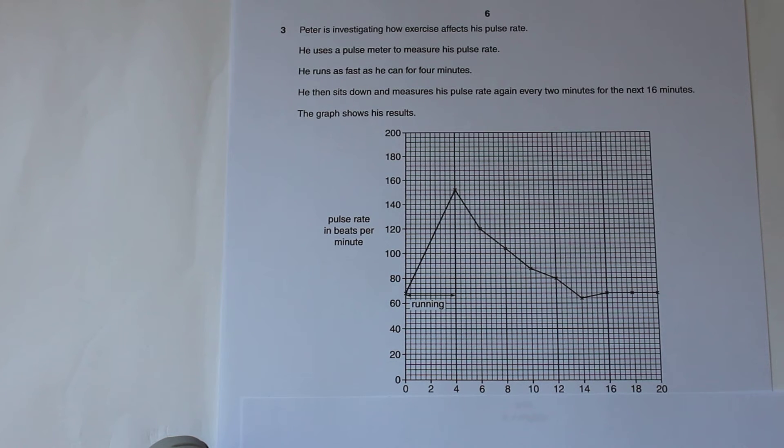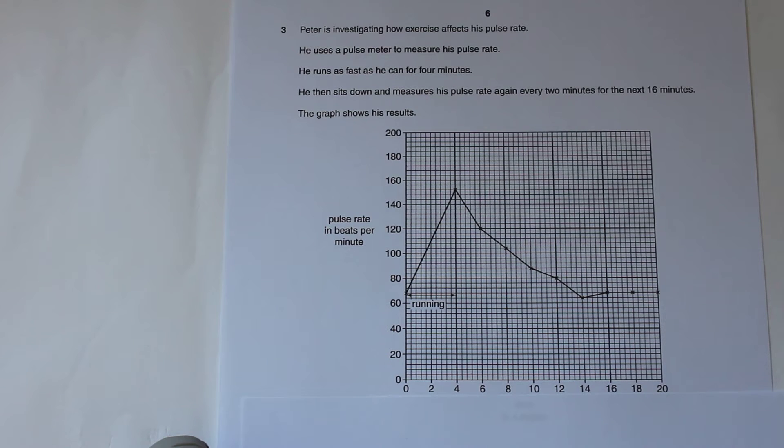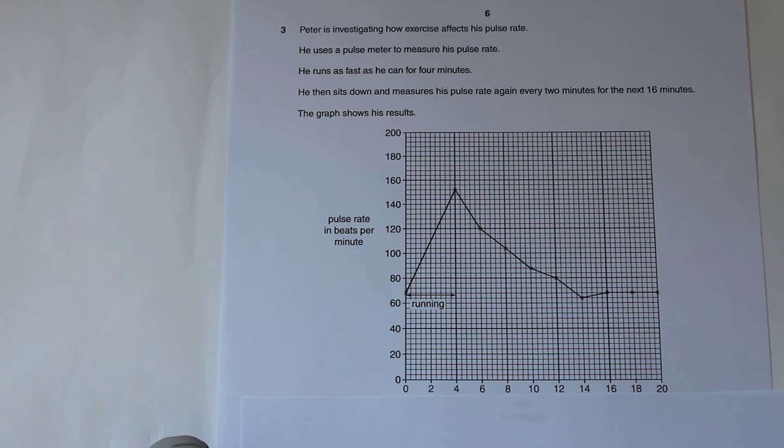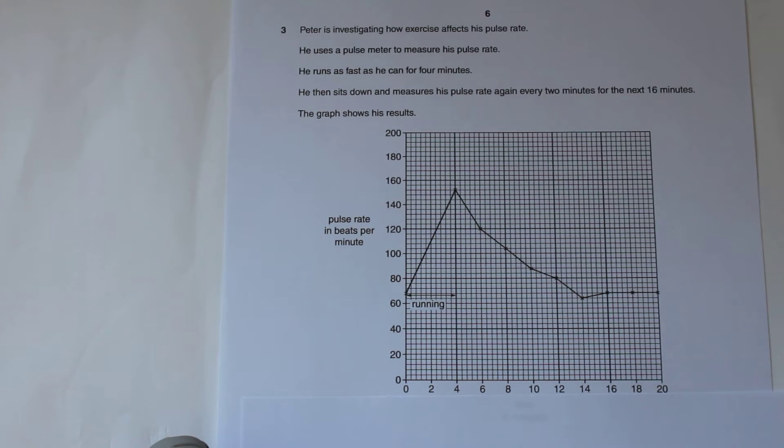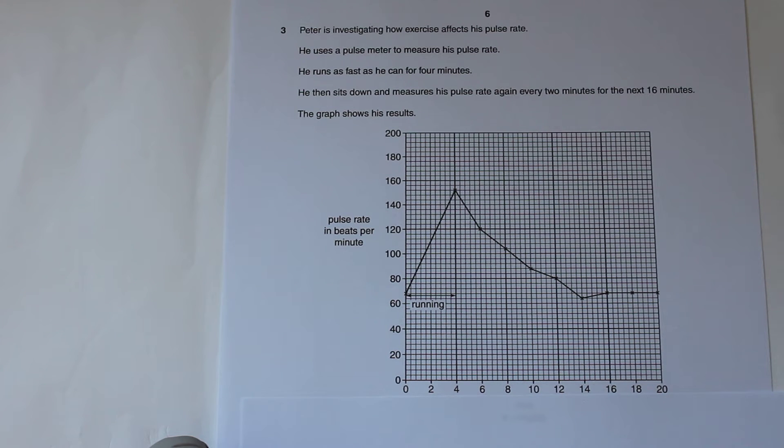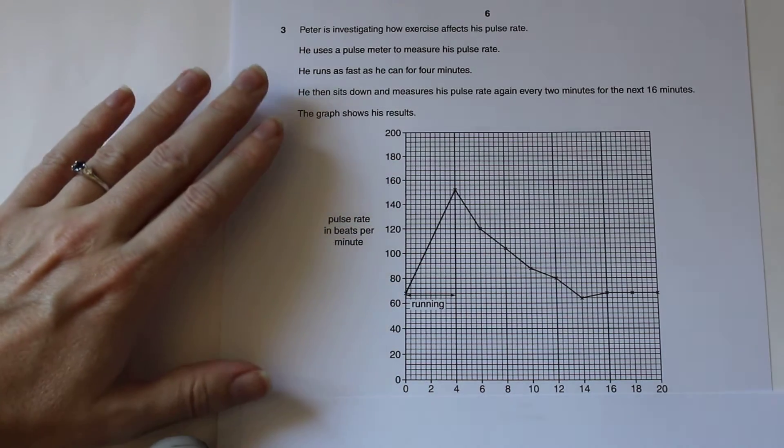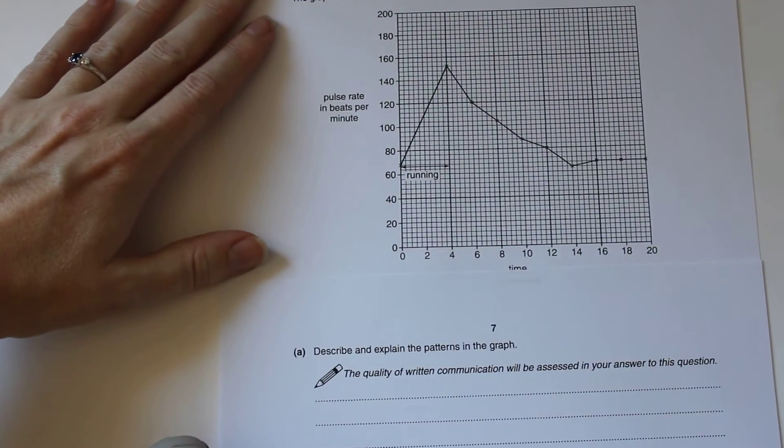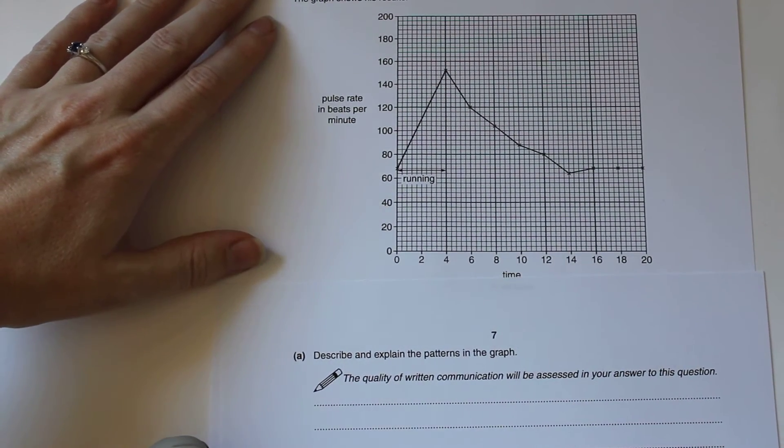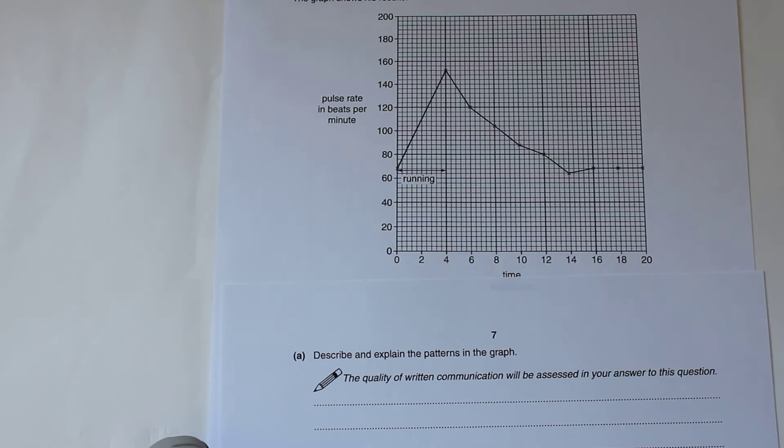Peter is investigating how exercise affects his pulse rate. He uses a pulse meter to measure his pulse rate. He runs as fast as he can for four minutes. He then sits down and measures his pulse rate again every two minutes for the next 16 minutes and the graph shows his results. The question is: describe and explain the patterns in the graph.